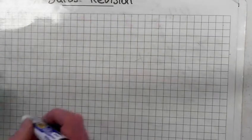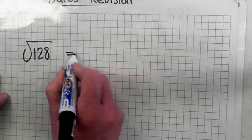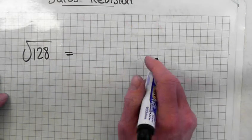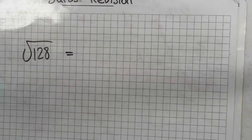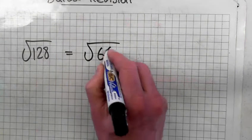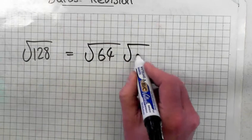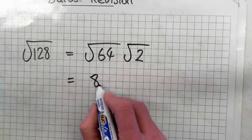Square root of one hundred and twenty-eight. What square number will divide into one hundred and twenty-eight? Sixty-four divides into it — sixty-four times two is one hundred and twenty-eight. The square root of sixty-four is eight, so the answer is eight root two.